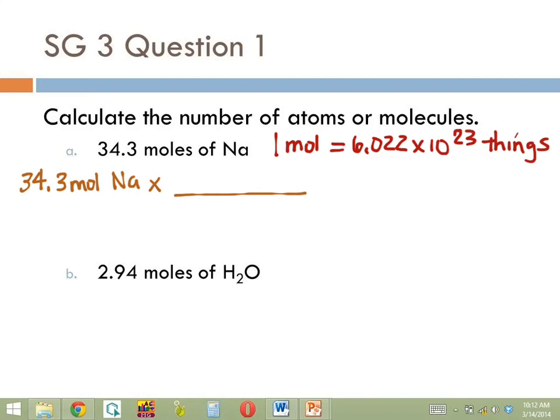We're trying to find the number of atoms. So we're going to multiply by atoms and we're going to divide by moles because the units tell us to do that. So the moles cancel.